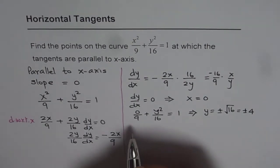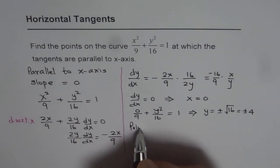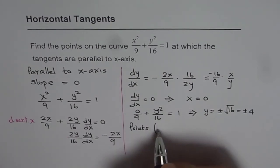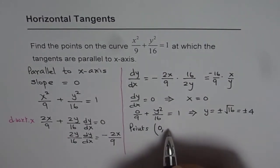Therefore the points are x value 0 and the y value could be ±4. So there are two points.